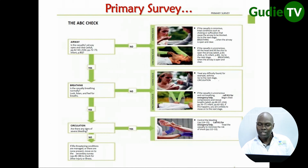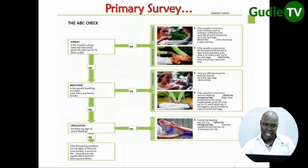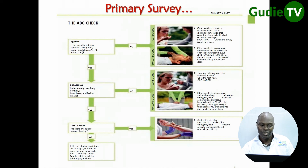Or, if the casualty is unconscious, then you do what we call CPR. You tilt the head and lift the chin to open the airway of that patient. When the airway is open and clear, breathing can start. However, if the airway was clear, go to breathing. For breathing, you find out if there is correct breathing — normally you look, listen, and feel for the breath as we saw.